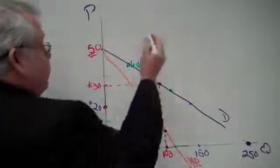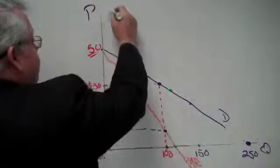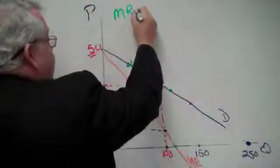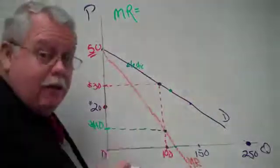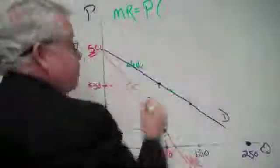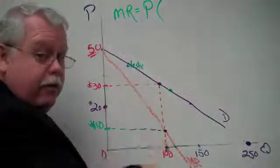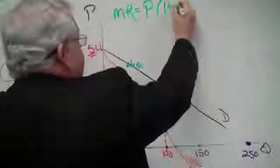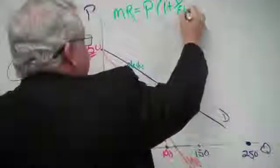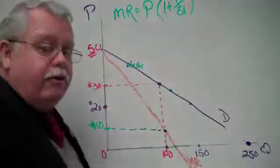Look at this. And don't forget it. The marginal revenue for any point on that demand curve is equal to the price at that point on the demand curve times 1 plus 1 divided by the price elasticity of demand.